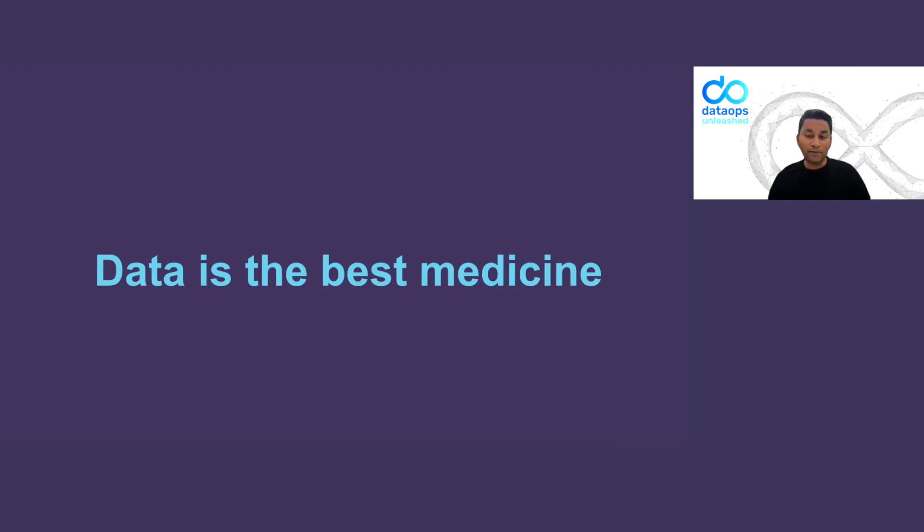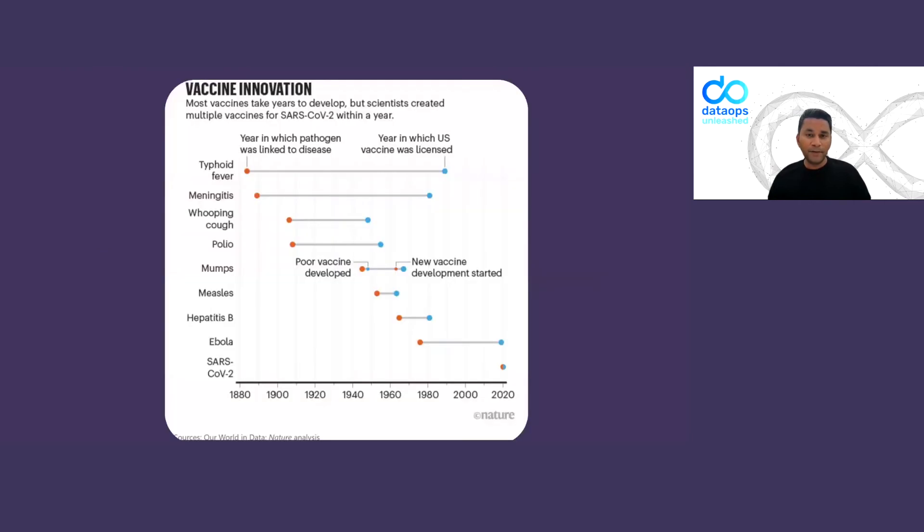Did you know a typical vaccine takes about 10 years to develop? This chart here shows the time it took to develop and release all these vaccines that we've seen so far. Some of them have taken over 30 years.